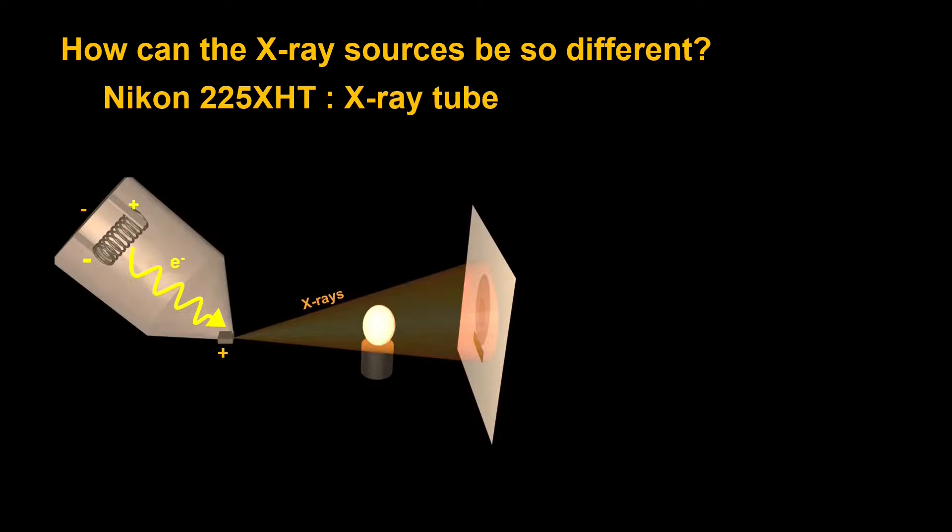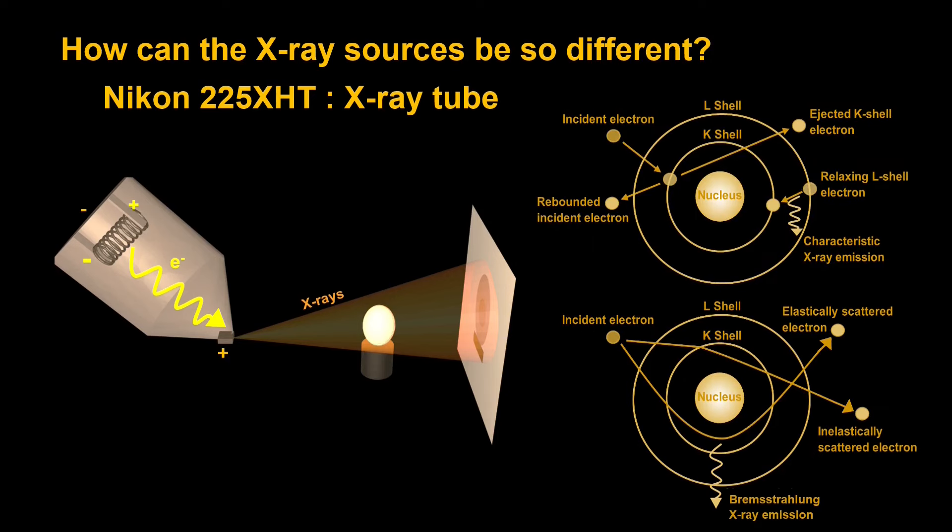So first the X-ray tube within the Nikon. We first have the generation of an electron with a tungsten filament shown here in the left. And so this will generate electrons which are then accelerated towards a metal target, in most cases tungsten. And when the electrons hit the metal target this is what produces the X-rays. So the X-rays are highly dependent on the atomic characteristics of the metal. There are two main sources of radiation within the metal.